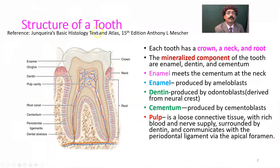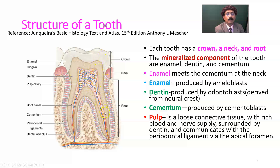The structure of the teeth includes the crown, neck (also called the cervix), and root. The tooth is composed of enamel, dentin, cementum, and the pulp of the teeth. The root has an apical foramen at its tip.